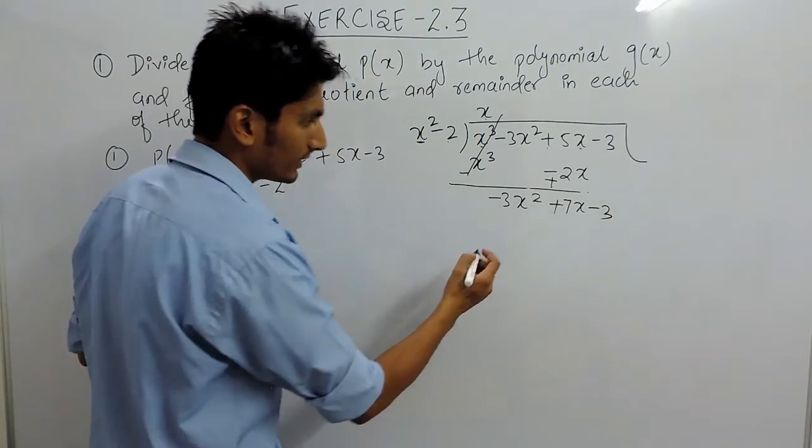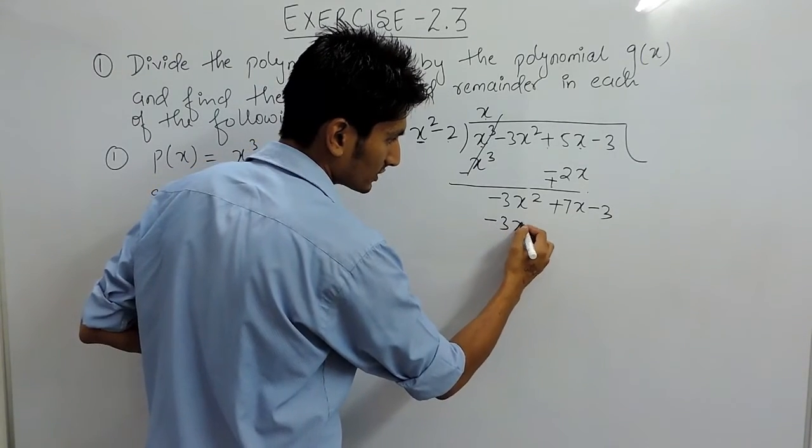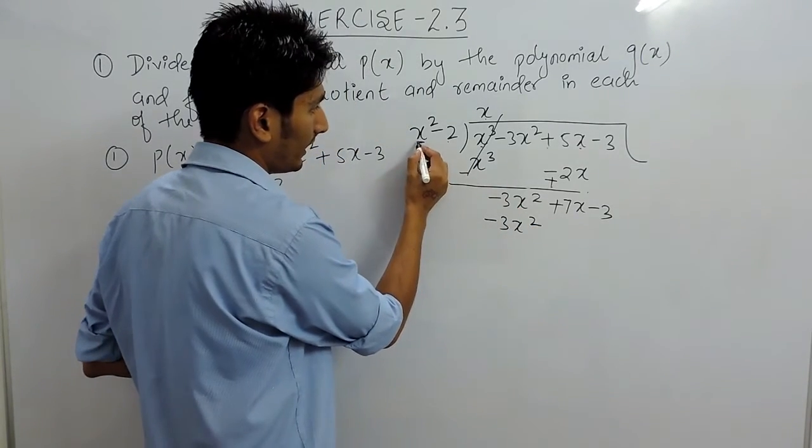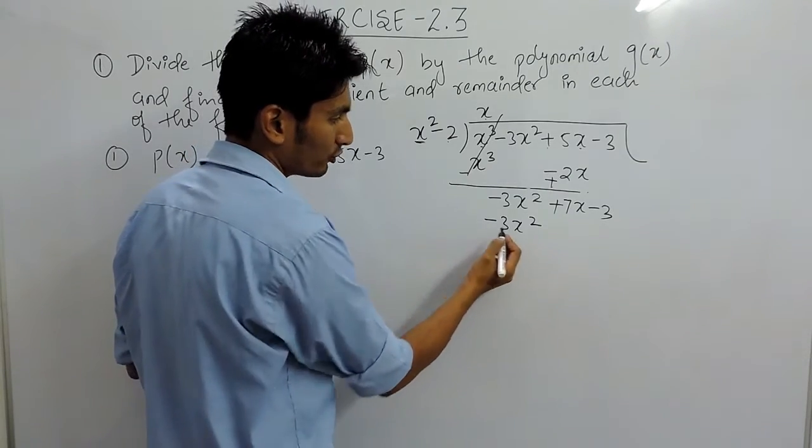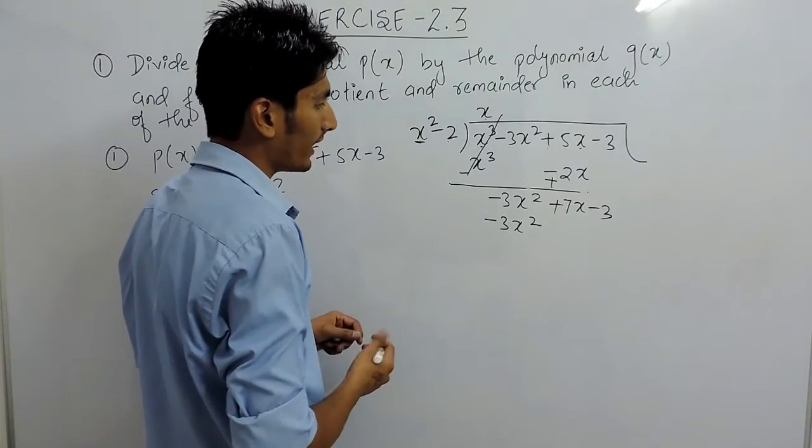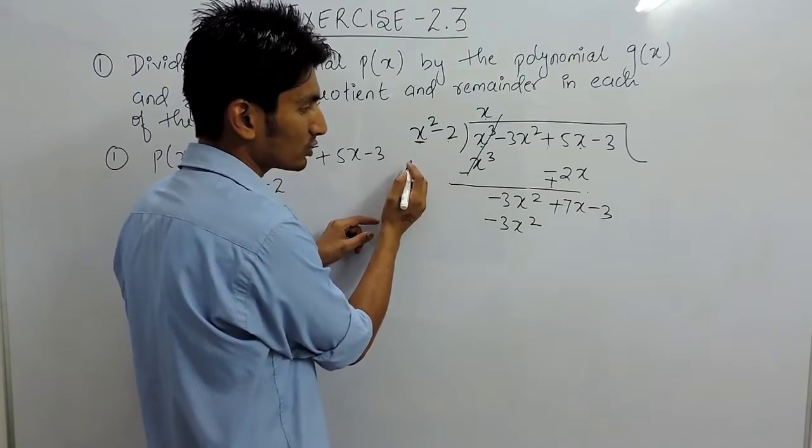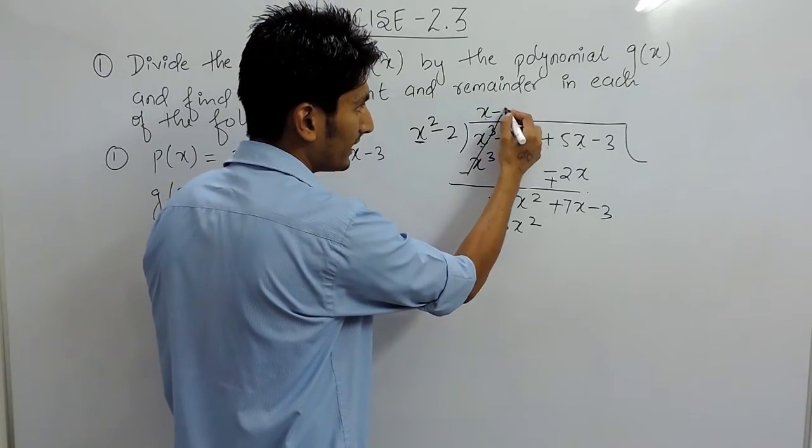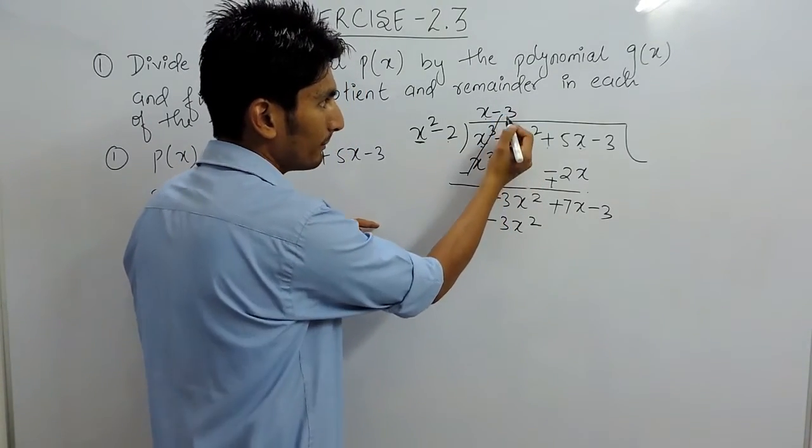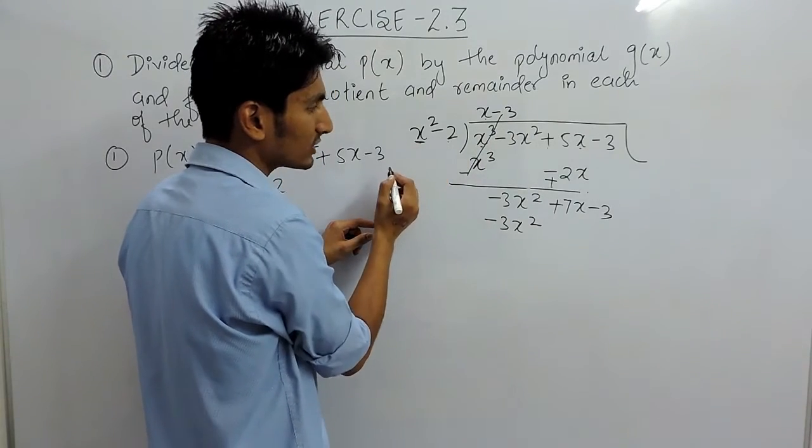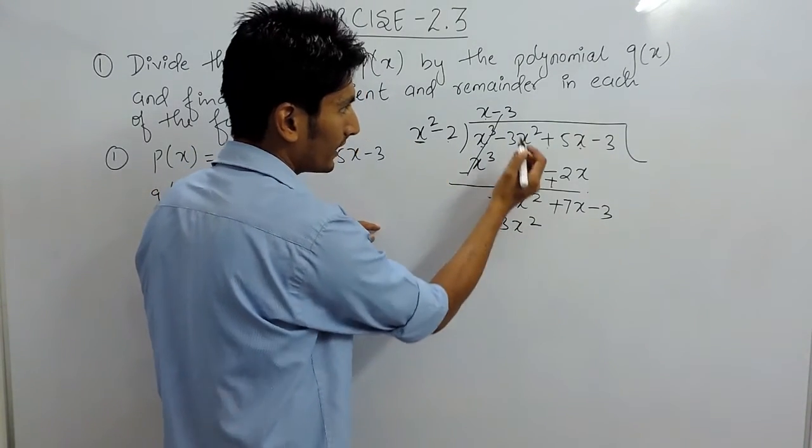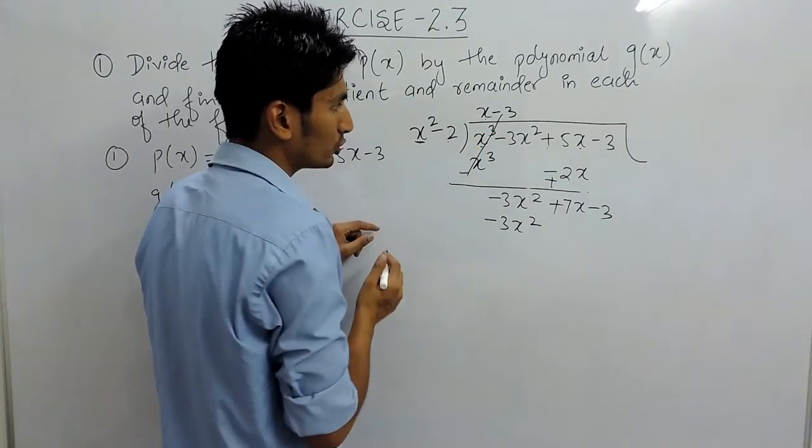Again you have to make minus 3x squared. You have to multiply with x to make 3x squared. There is already x squared, so you have to multiply it with minus 3, because minus 3 multiplied by x squared will give minus 3x squared.